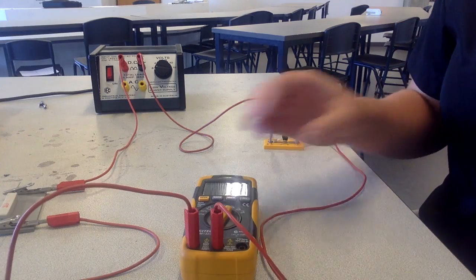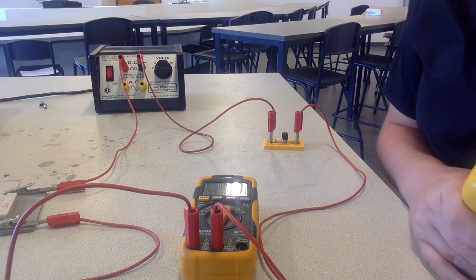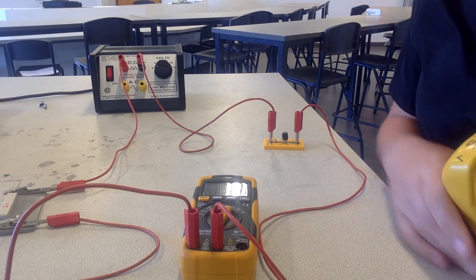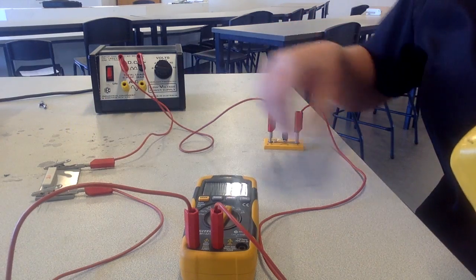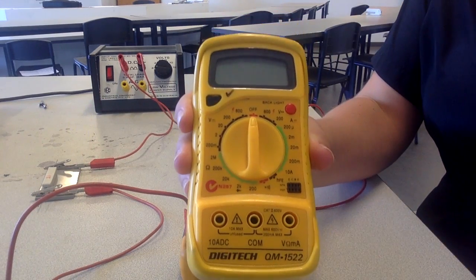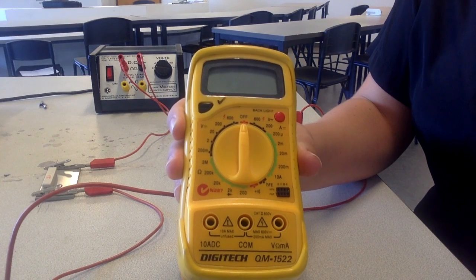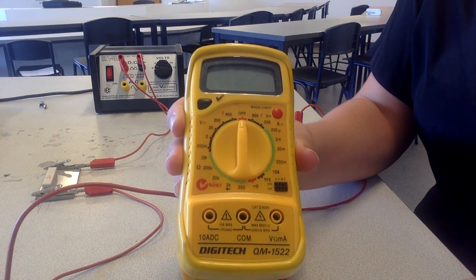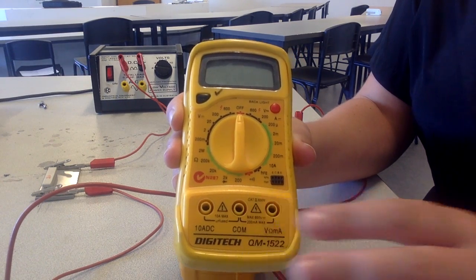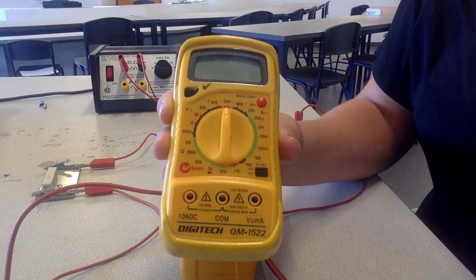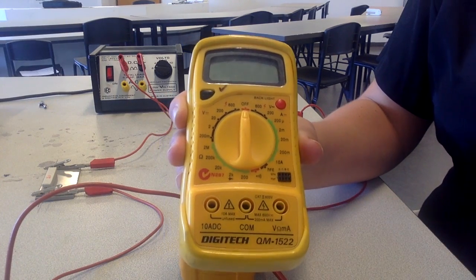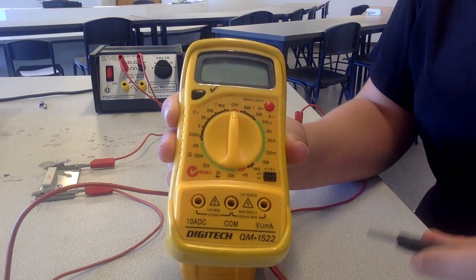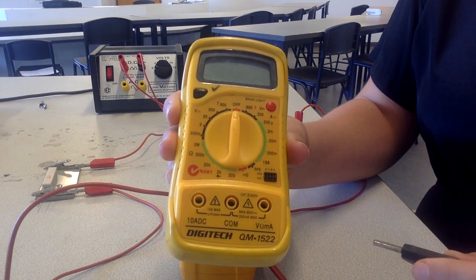Next thing we need to do is add in a voltmeter because we're going to measure the voltage across our resistor. So for this we're going to use this multimeter. Again this can measure amps and voltage but I prefer to use a different meter just to make it a bit clearer. So voltmeters need to be put in parallel with the circuit.